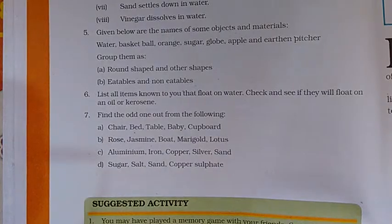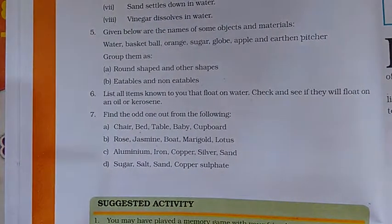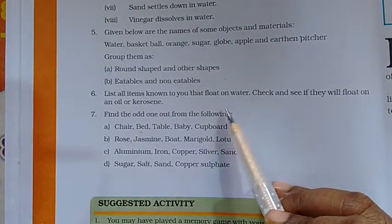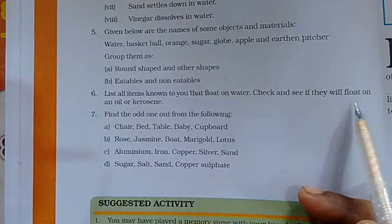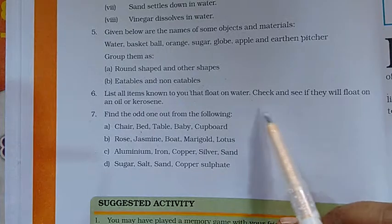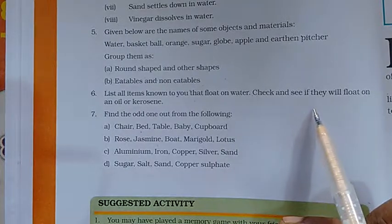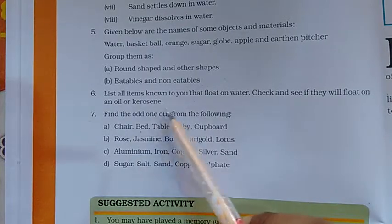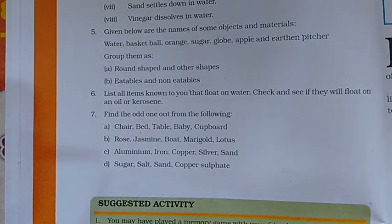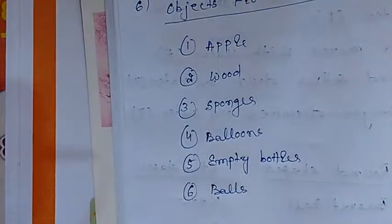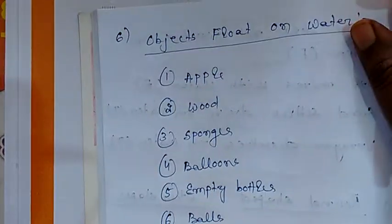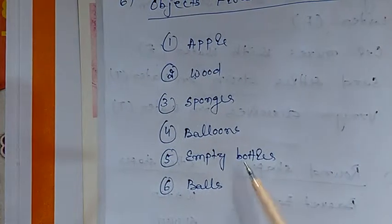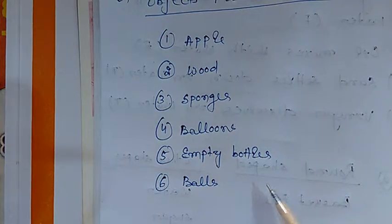Question number 6: list all items known to you that float on water, and check if they will float on oil or kerosene. Objects that float on water always sink in oil, because oil floats on water. Objects that float on water: apple, wood, sponges, balloons, empty bottles, balls, and so on. You can add more objects.